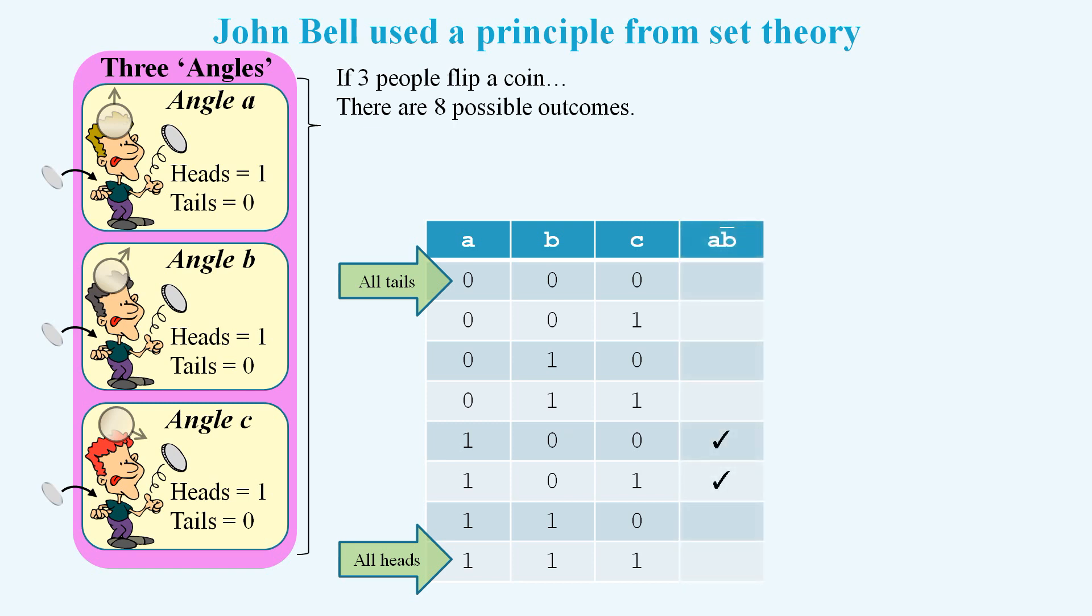Next we identify the rows where A flipped heads and B flipped tails, which is denoted by the column heading of A not B. Then we identify where B flipped heads and C flipped tails, and finally we identify where A flipped heads and C flipped tails. Now if we wanted to count the number of times A flipped heads and B flipped tails, then we would need to add up the number of times these two results occurred. And if we wanted to add the number of times B flipped heads and C flipped tails, then we add the count for the relevant rows, giving us the count for these four rows to add up.